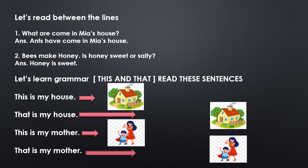'That is my house' — when you are far from your house, you use 'that.' 'This is my mom' — if your mom is sitting right next to you in close proximity, you use 'this is my mother.' You use 'that is my mother' when your mom is standing far away and you are pointing her out to a friend or teacher, saying 'there she is standing near the gate.' That is when you use 'that.'